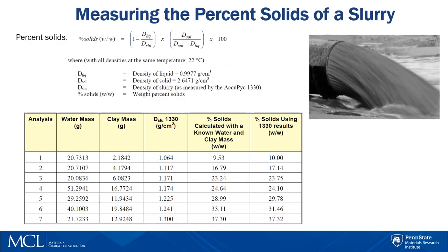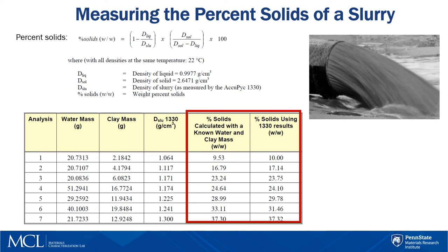Another example illustrates how the percent solids of a slurry can be calculated. Analyses were performed on samples of varying percentages of solids, and the density of the dry material was also measured. As shown in the table, the measured percent solids of a slurry was in good agreement with percent solids calculated from the mass balance. So if you know the density of a solid and the density of the liquid, or you can measure them by pycnometer, you can calculate the percent of solids in a slurry using the equation shown above.